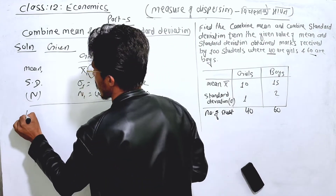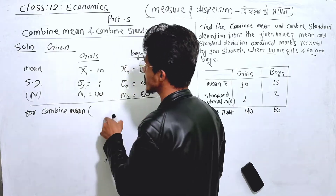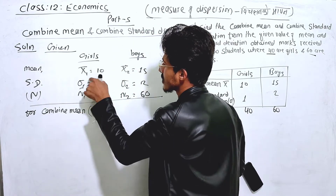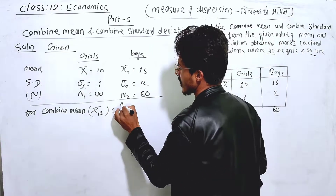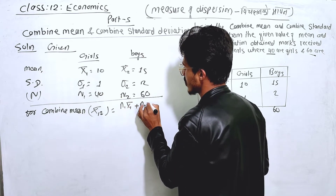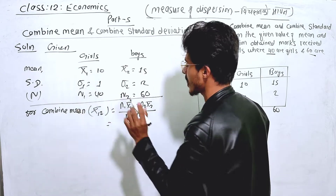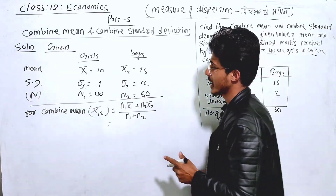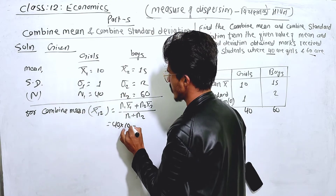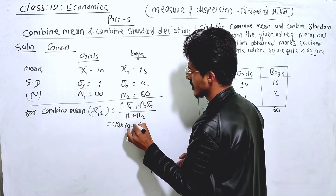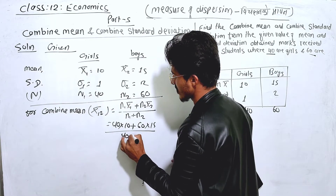For the combined mean, the formula is: x̄₁₂ = (n₁·x̄₁ + n₂·x̄₂) / (n₁ + n₂). Substituting: group 1 has n₁ = 40 and x̄₁ = 10; group 2 has n₂ = 60 and x̄₂ = 15. So the denominator is 40 plus 60.